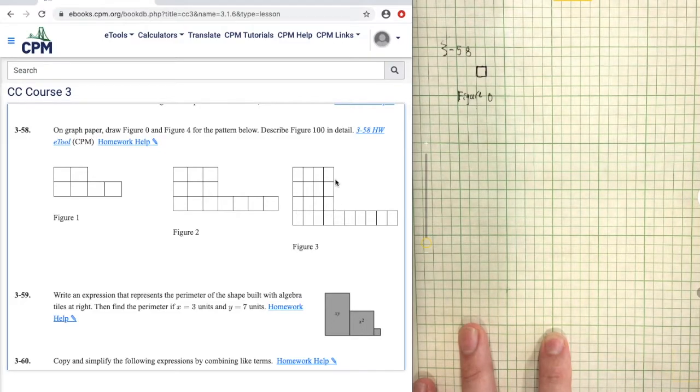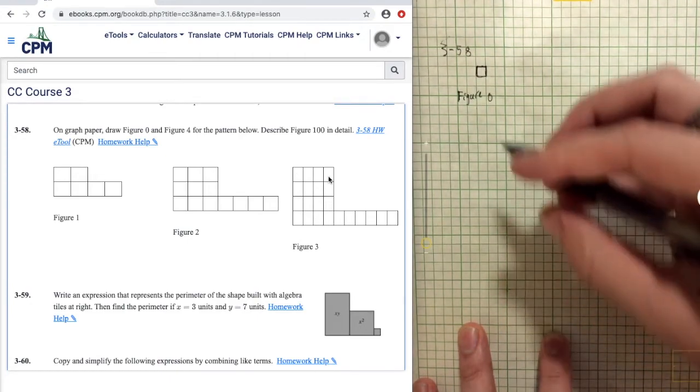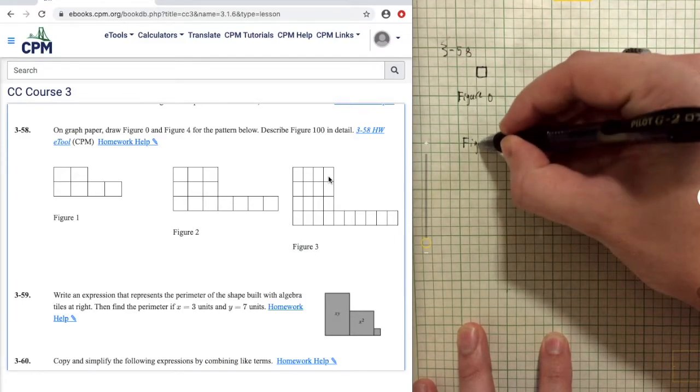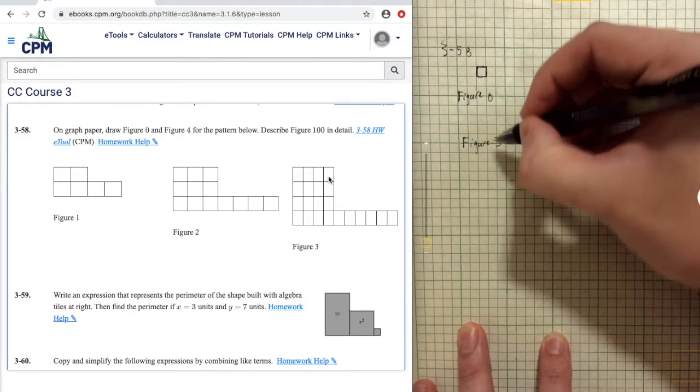Figure 4 on the other hand shouldn't be too bad. It looks like we just need to increase the square by one and increase the tail by two. So if this is a four by four square. Figure 3, let's give ourselves some space. Oh, sorry. Figure 4. We already have figure 3.